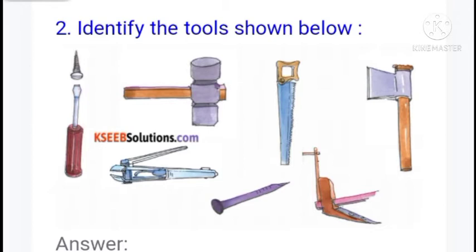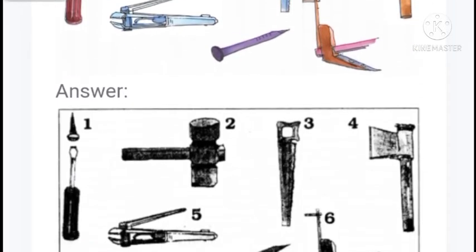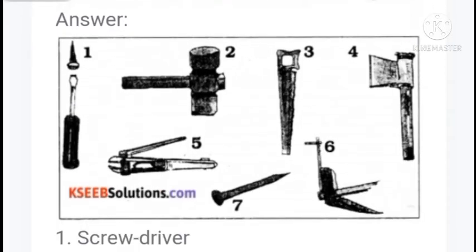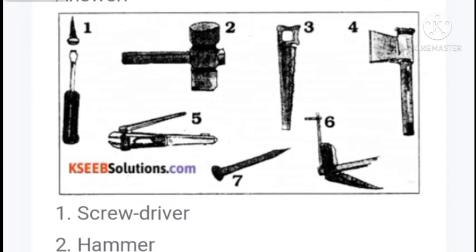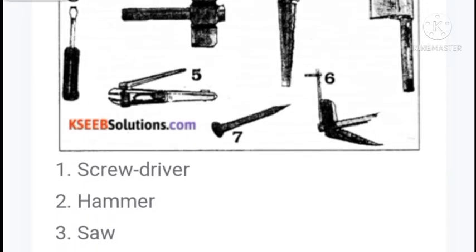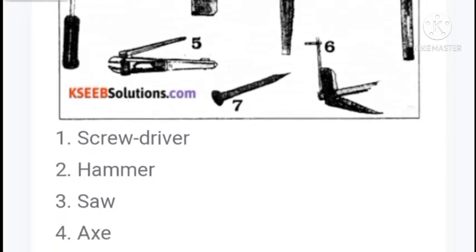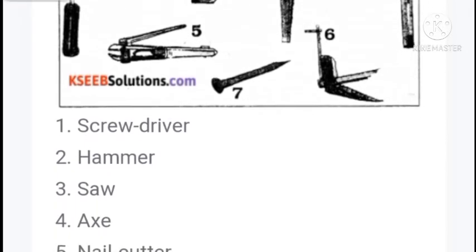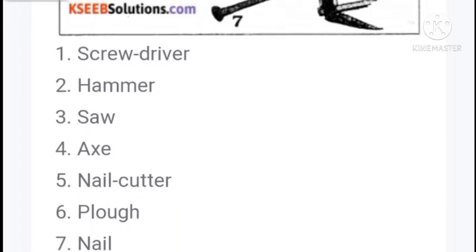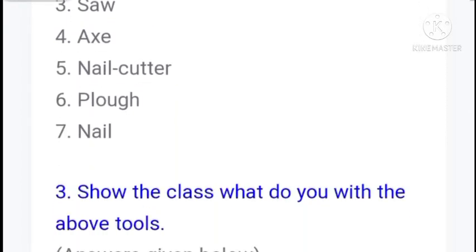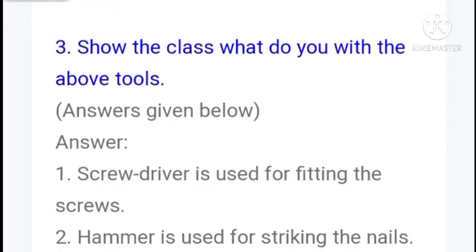Next, identify the tools shown below. Here you can see a number of tools. First: screwdriver. Second: hammer. Third: saw. Fourth: axe. Fifth: nail cutter. Sixth: plow. Seventh: nail.